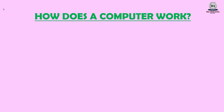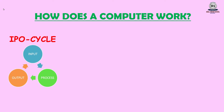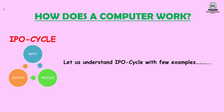Now children, you must be curious to know how exactly a computer works. The working of a computer is based on the principle of the IPO cycle. What is the IPO cycle? I means Input, P means Process, O means Output.